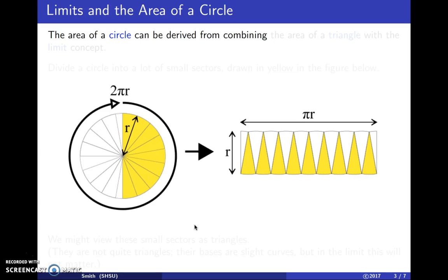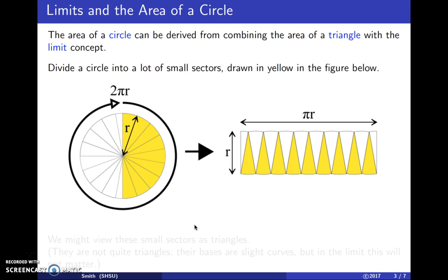The area of a circle can be derived from combining the area of a triangle with the limit concept. Imagine that we divide a circle into lots of small sectors, like those on the left, drawn in yellow.